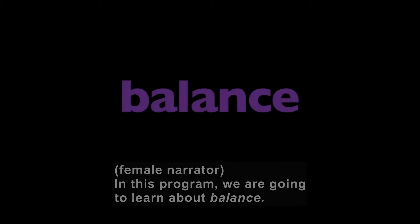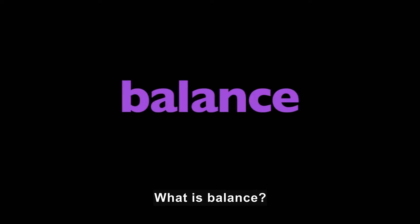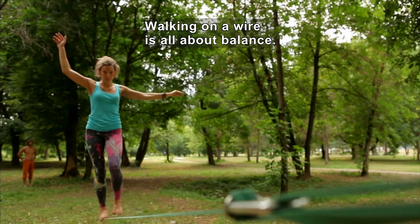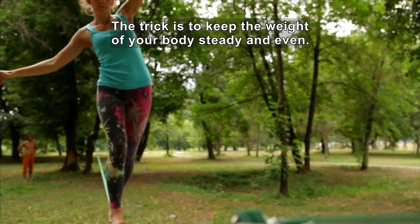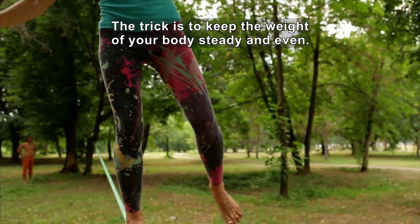In this program, we're going to learn about balance. What is balance? Balance means to make equal or level. In a park, a woman walks on a rope tied between trees a foot off the ground. Walking on a wire is all about balance. The trick is to keep the weight of your body steady and even.